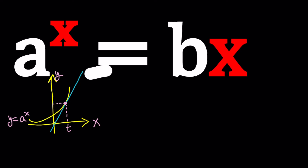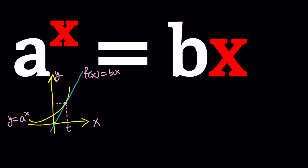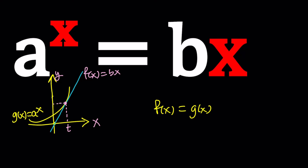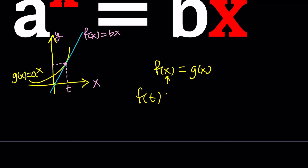I can express this better by calling one function f of x equals bx, and the other g of x equals a to the power of x. I want f of x to equal g of x at some point, and that is the value t. So in other words, f of t equals g of t — that's where they touch each other or intersect. So f of t is bt and g of t is a to the t, giving us an equality. But that's not good enough on its own — how do you solve this equation?